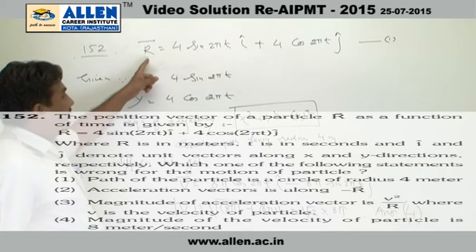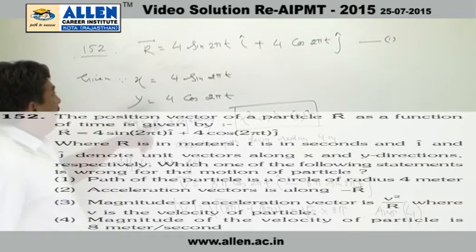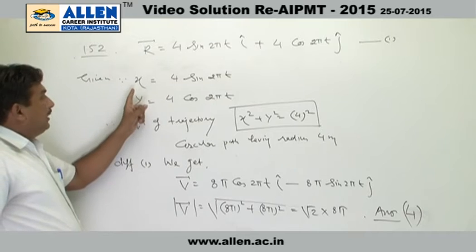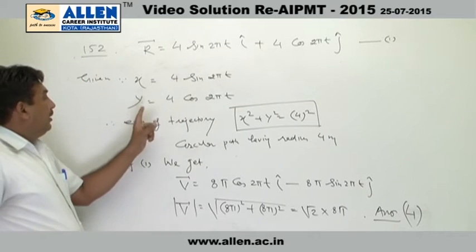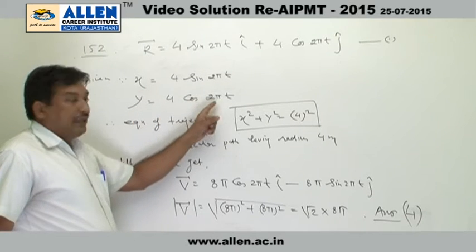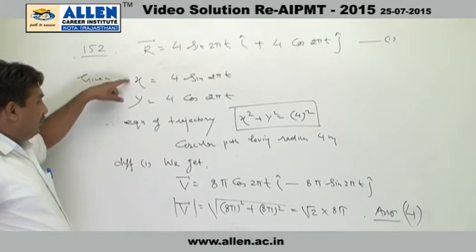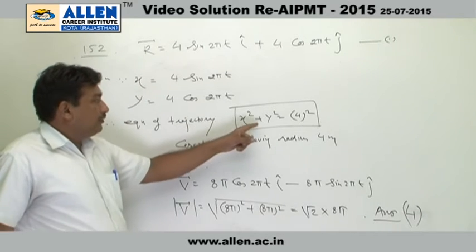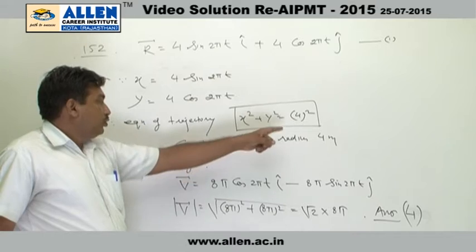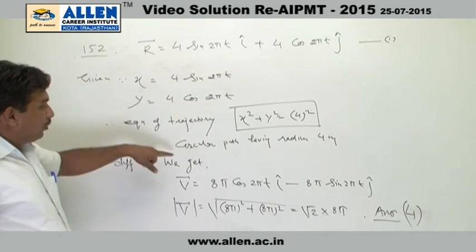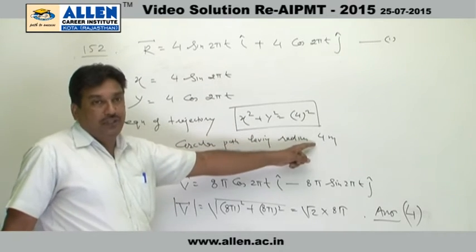In question number 52, the position vector r is given. Comparing this position vector, we get x equal to 4 sin 2πt and y equal to 4 cos 2πt. By taking the equation of trajectory, we get x² + y² = 4². So we can conclude that the path will be circular and having radius of 4 meter.